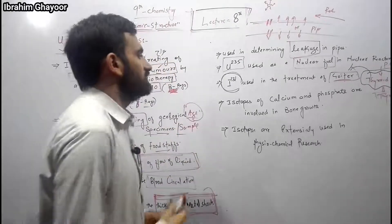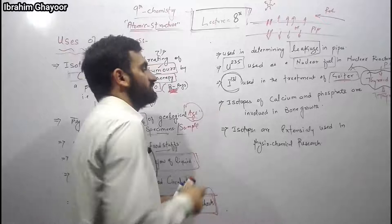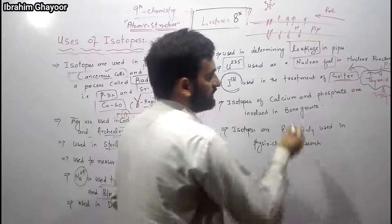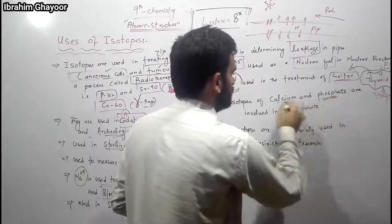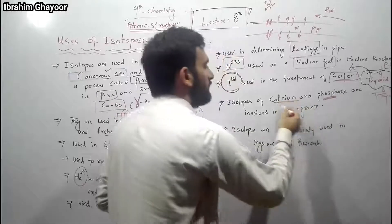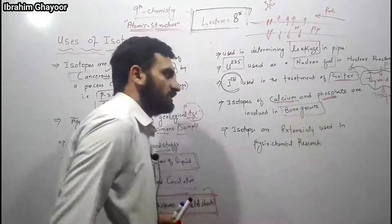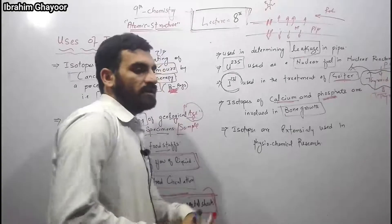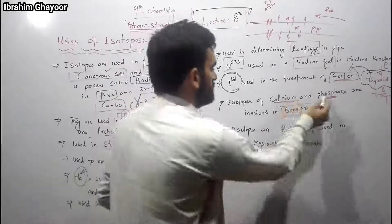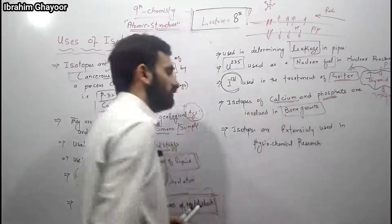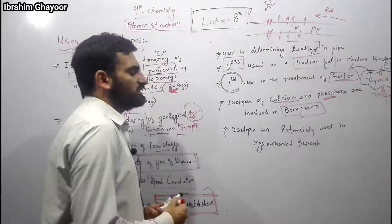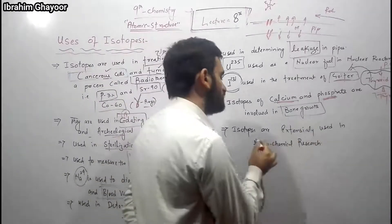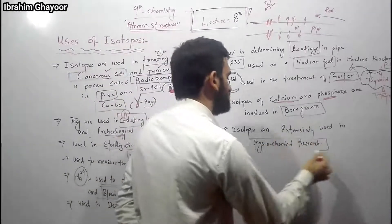Calcium and potassium isotopes, as well as calcium phosphate isotopes, are used to study bone growth. These isotopes are highly involved in studying how bone growth occurs in the body.